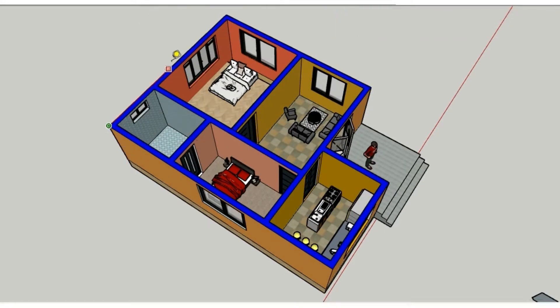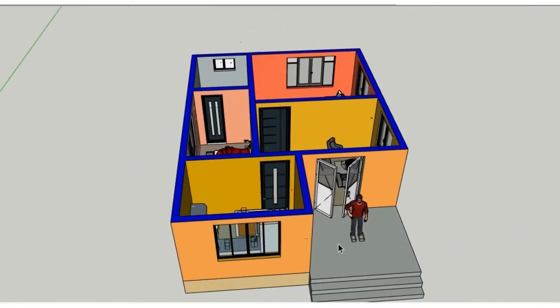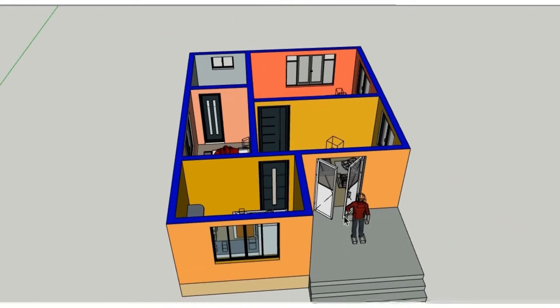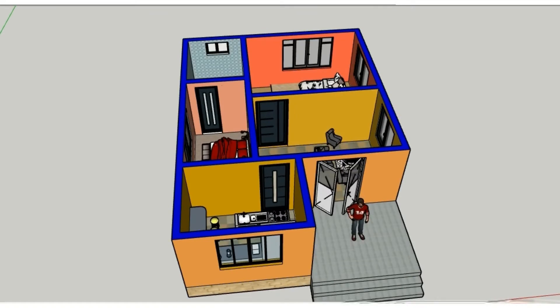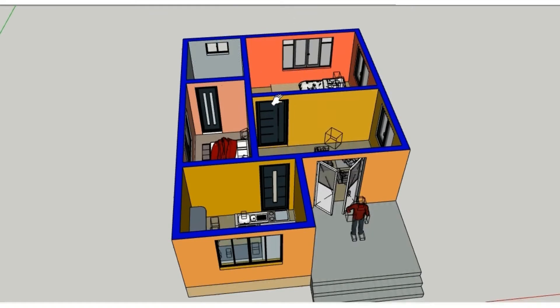First let's see the dimensions of the plan. 6.9 meters is the length of this house plan and 9.4 meters is the width. Here we have these stairs and this is our main door for getting inside to the house.